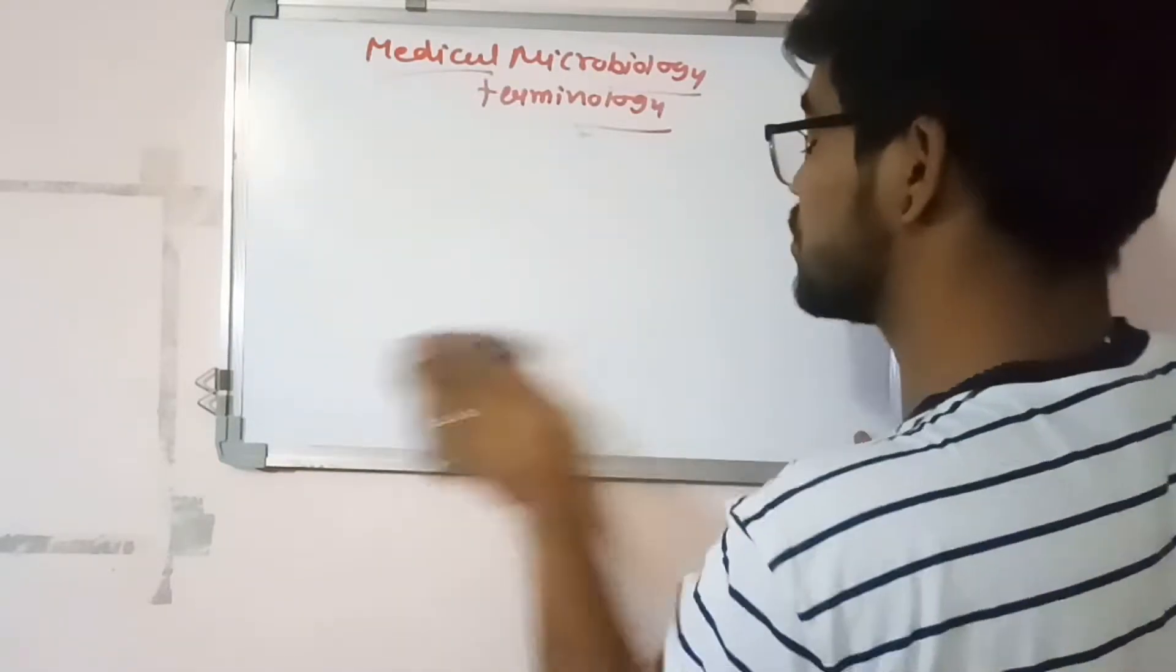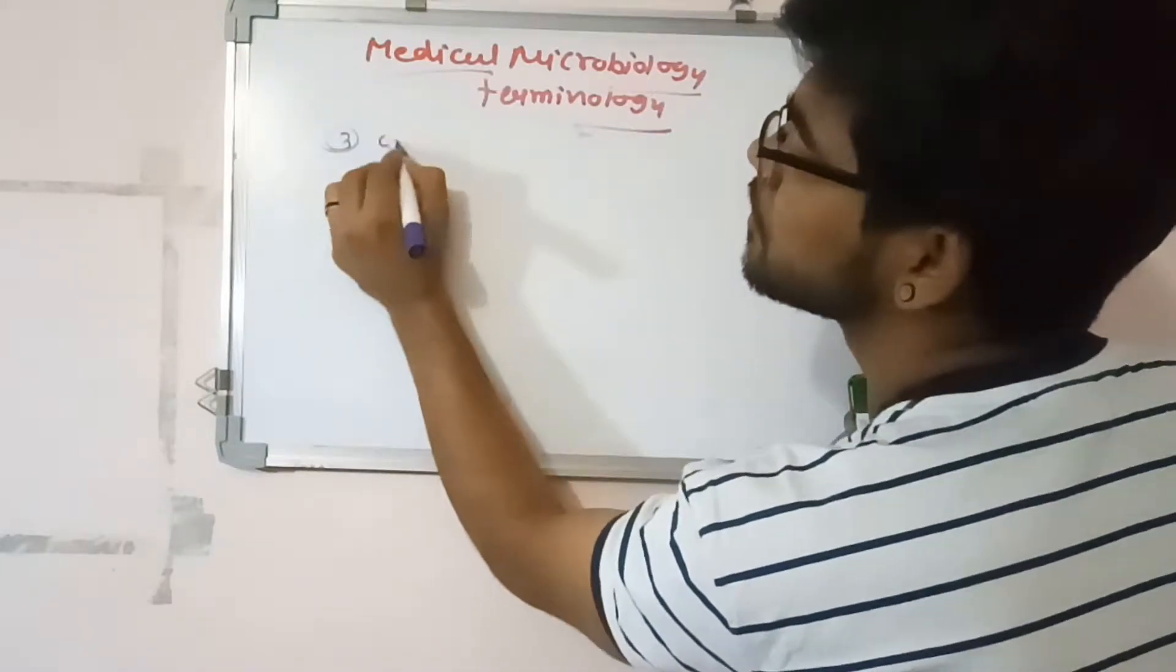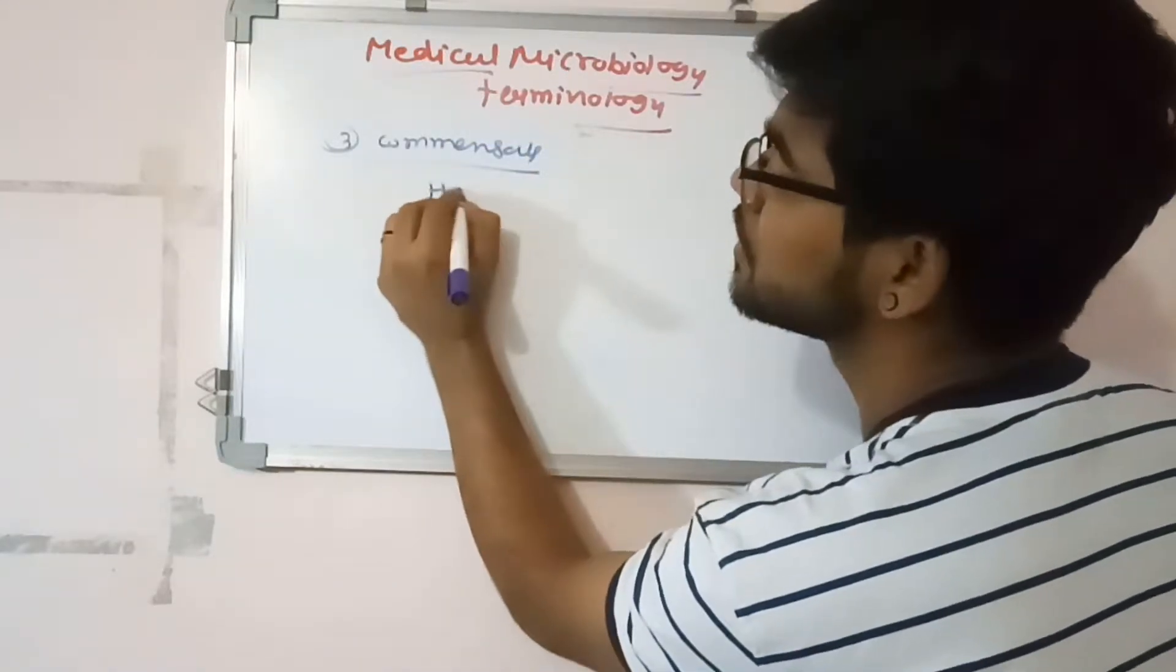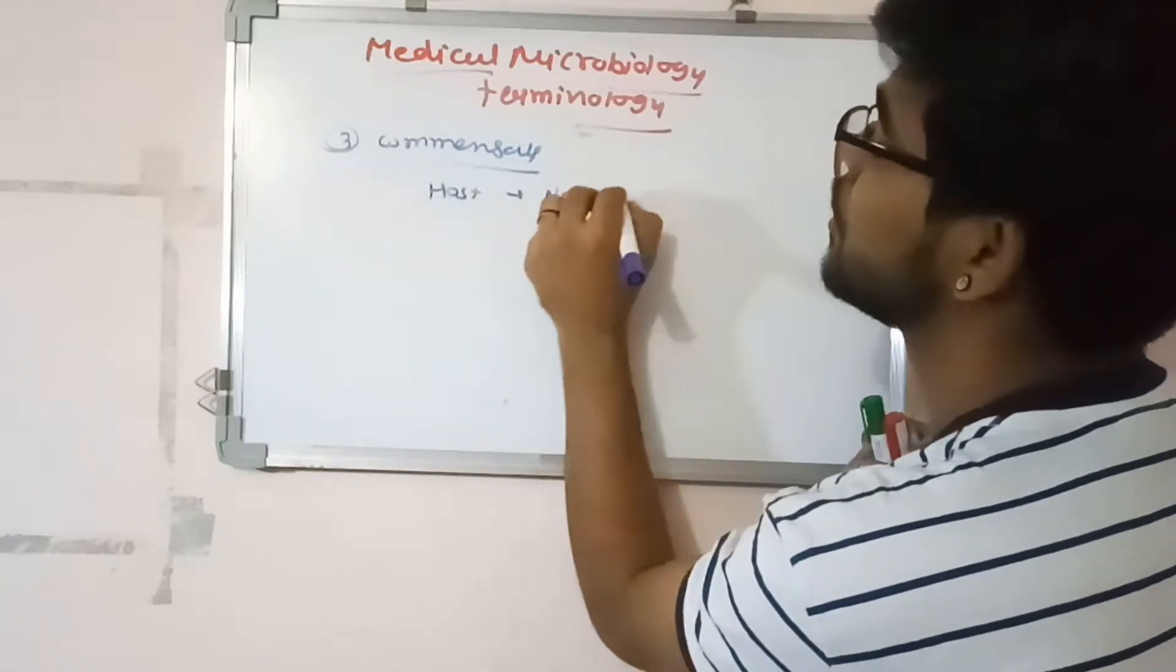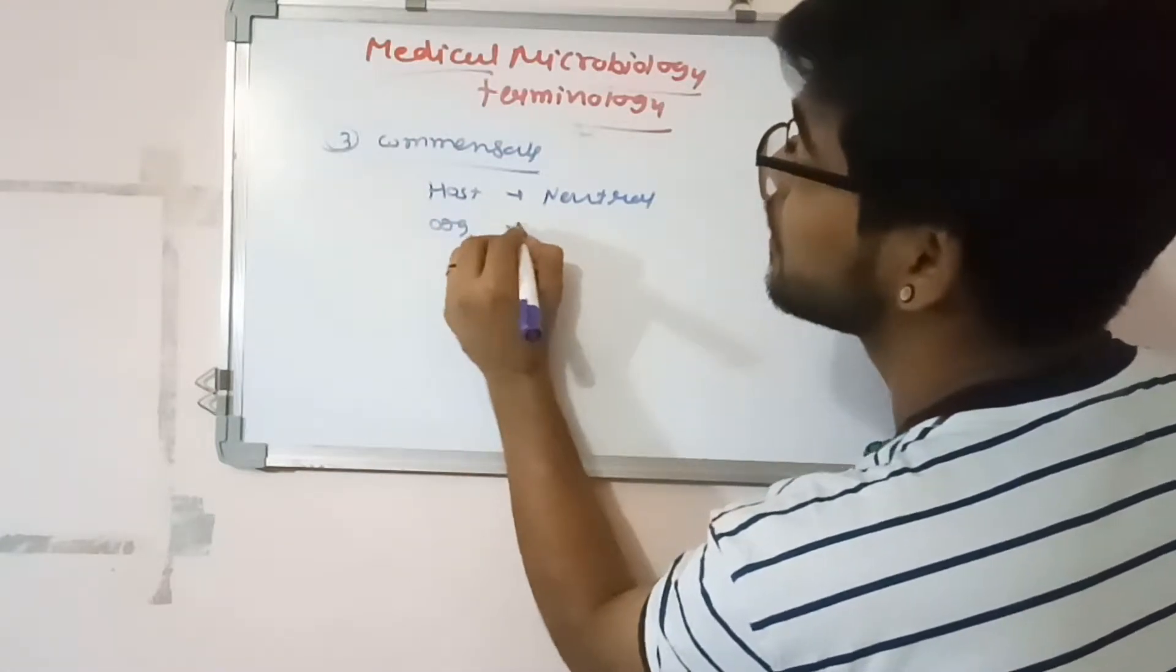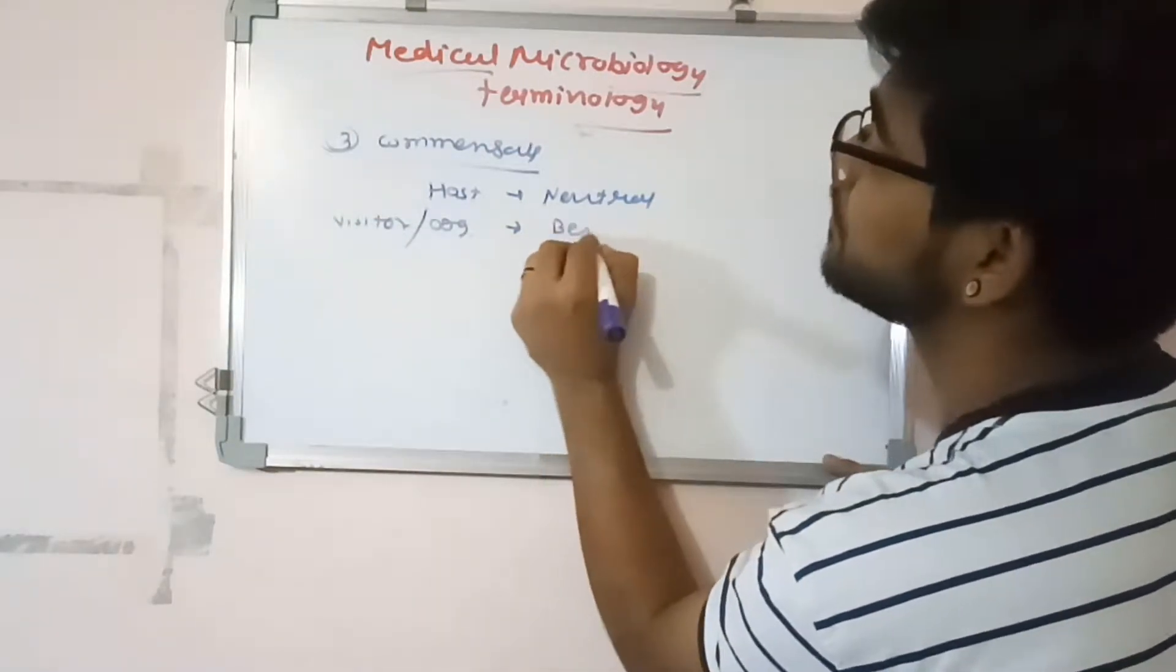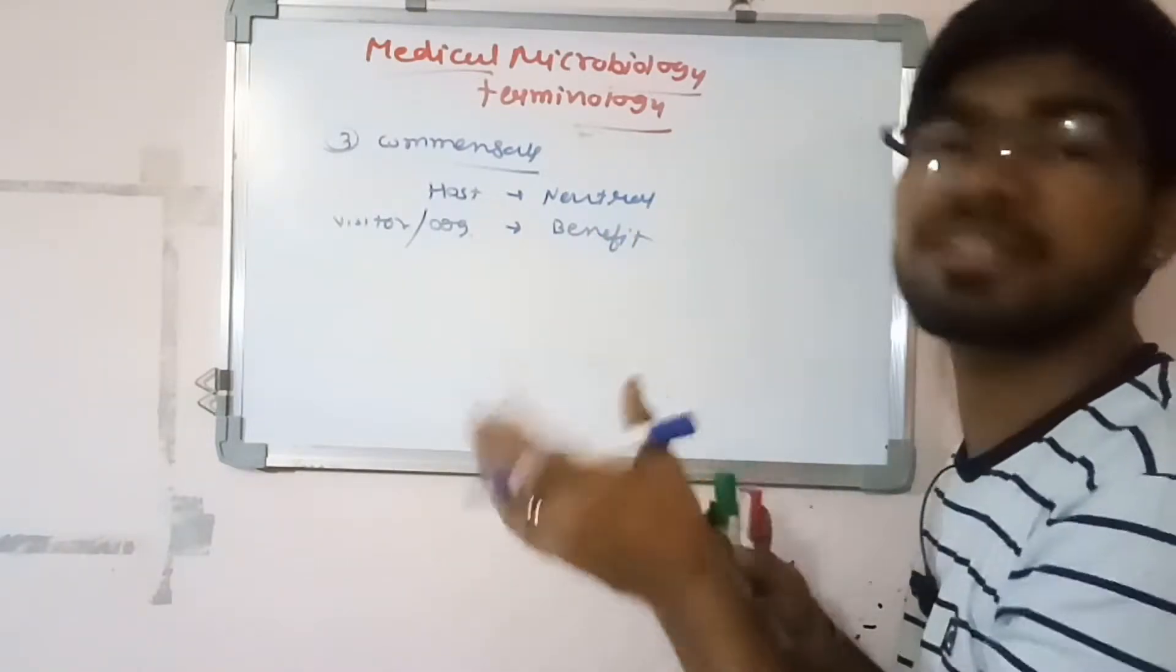In commensal organisms, the host is neutral - it means nothing happens with the host, but the organism, the visitor, will benefit. For example, our skin flora doesn't damage us, nothing happens to us, but they benefit - they grow on our skin.